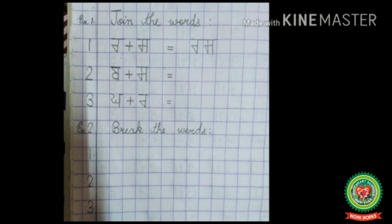Now leave one line and write 'Exercise 2.' After that, leave one box after the margin line and write 'Break the Words' — B-R-E-A-K, break, T-H-E, the, W-O-R-D-S, words. Don't forget the first letter capital — 'B' should be capital. After that, leave a line and put number one.